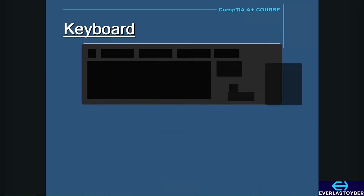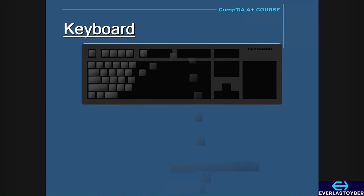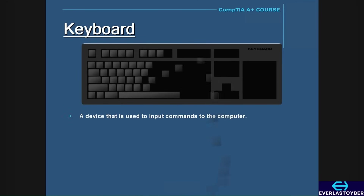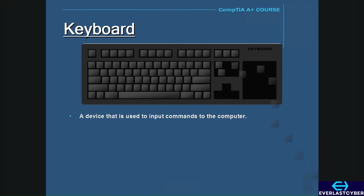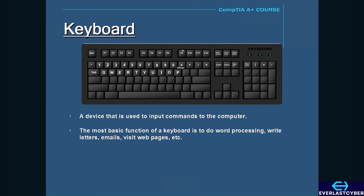One of the most basic input devices on a computer is a keyboard. A keyboard is a device used to input commands to the computer. It has keys made up of alphabets, numbers, and symbols that you can press with your fingers. The most basic functions include word processing, writing letters, emails, visiting webpages, and so on.